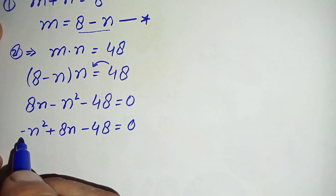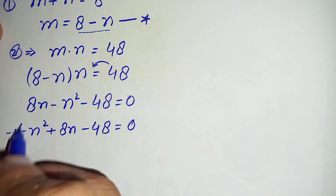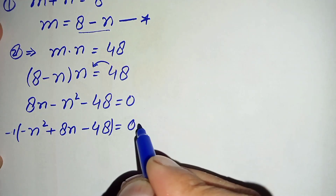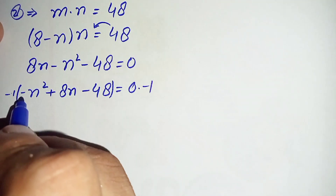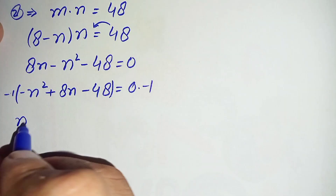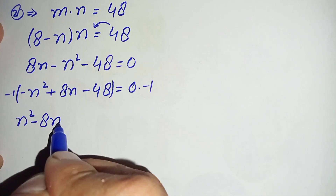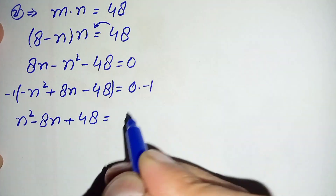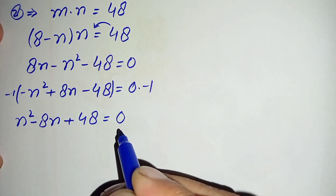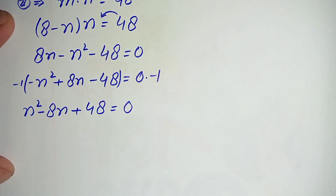The coefficient of n squared is negative, so we multiply the entire equation by negative 1 on both sides. The signs of all terms change, giving n squared minus 8n plus 48 equals 0. This is a quadratic equation that we cannot solve by factorization, so we use the quadratic formula.